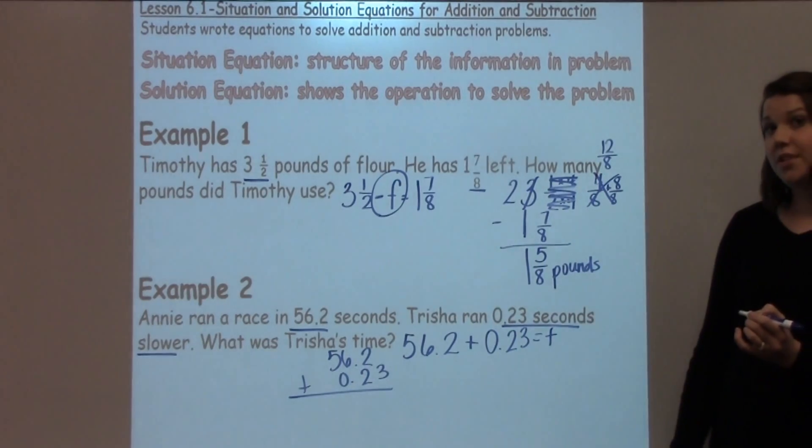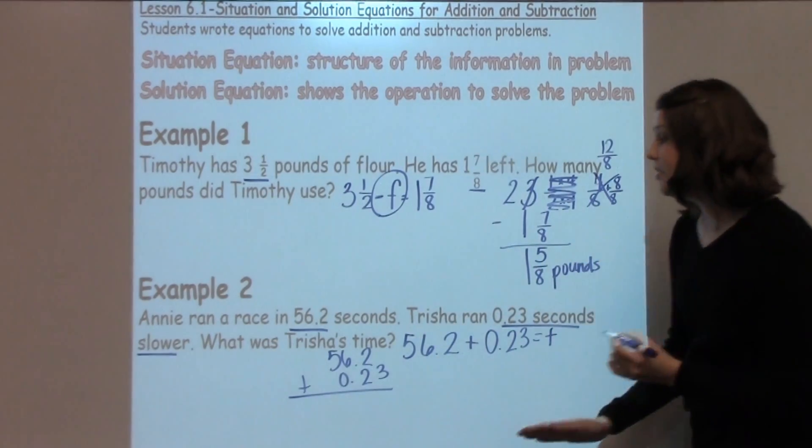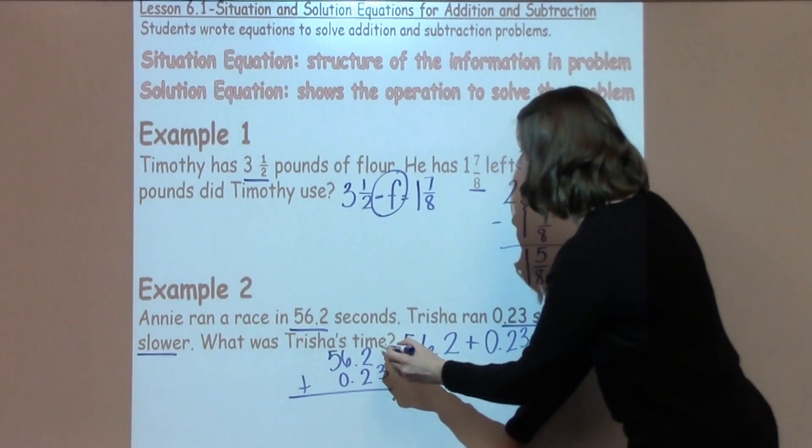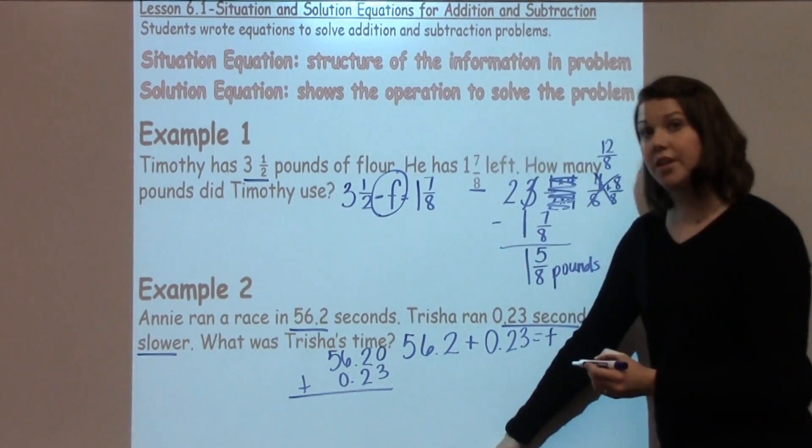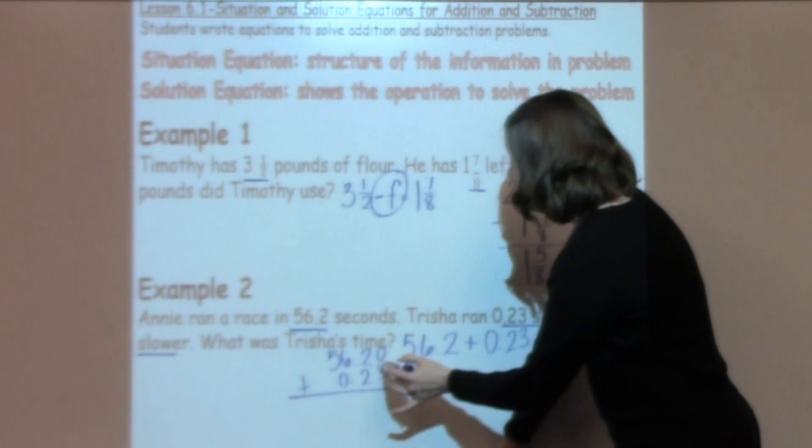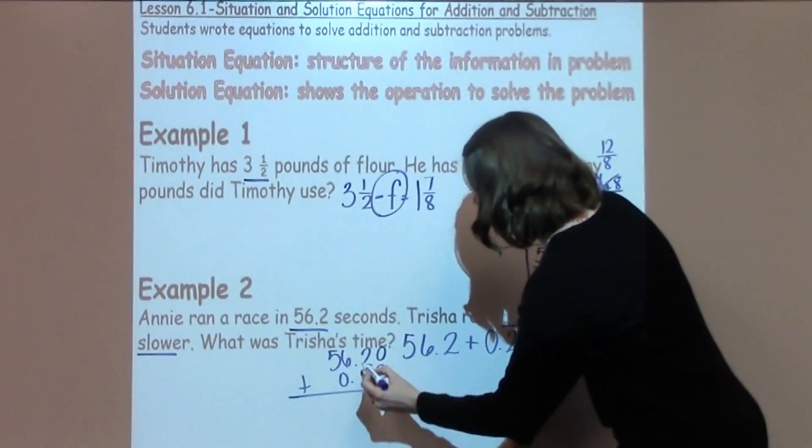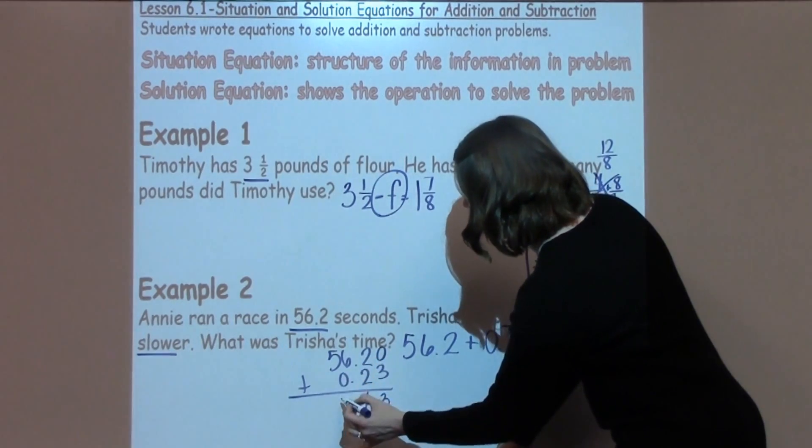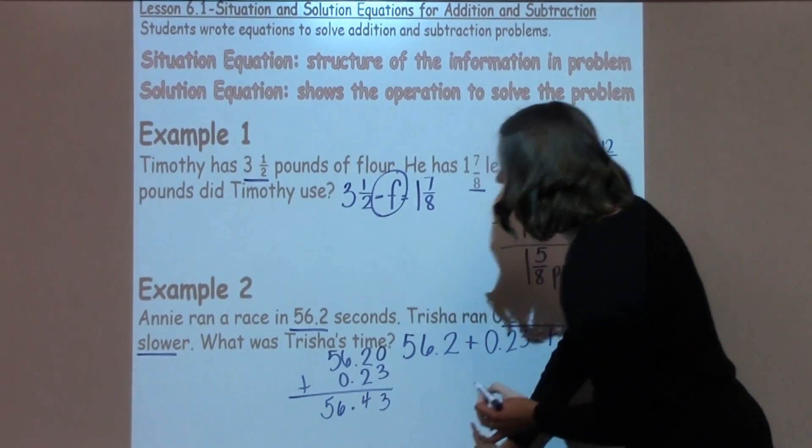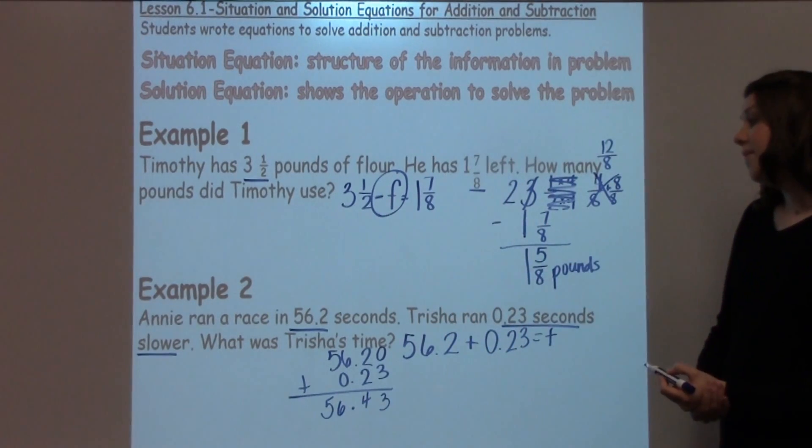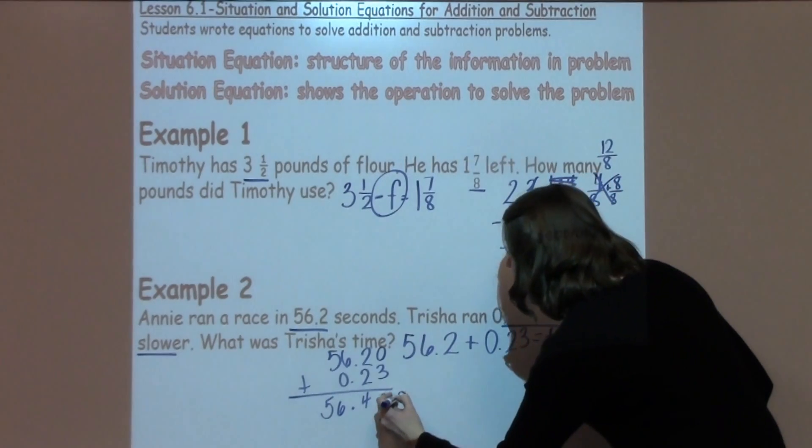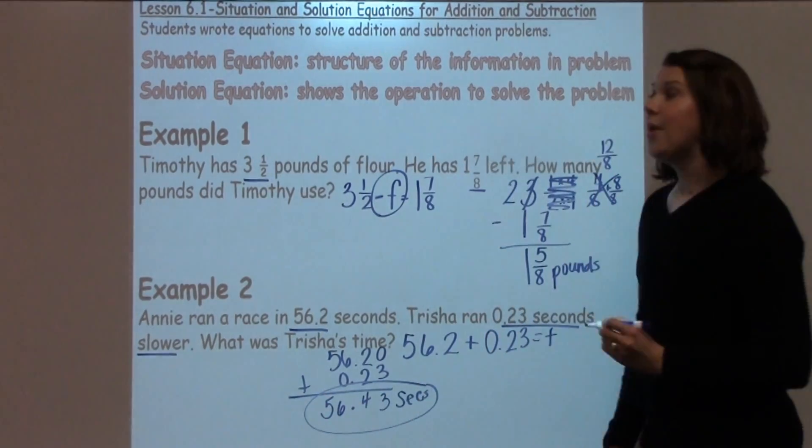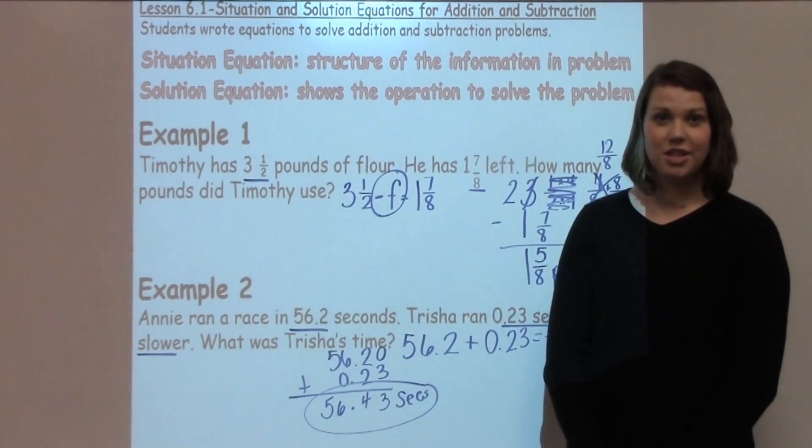A quick reminder about decimal addition to make sure that you line up your decimals. And with this answer, because there's nothing in the hundredths place, I would recommend putting the 0 there so students don't get confused. 0 plus 3 is 3. 2 plus 2 is 4. Bring down my decimal. 6 plus 0 is 6, and then I just have my 5. So Trisha's time would be 56.43 seconds. I would want to label that for my final answer. If you have any questions about today's math lesson, make sure you see your math teacher.